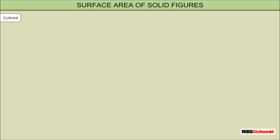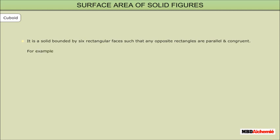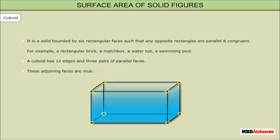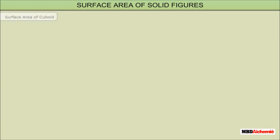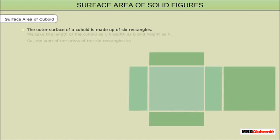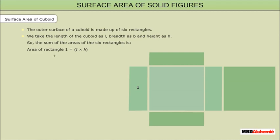Let us start with the cuboid. It is a solid bounded by six rectangular faces such that any opposite rectangles are parallel and congruent. For example, a rectangular brick, a matchbox, a water tub, a swimming pool. A cuboid has 12 edges and 3 pairs of parallel faces. These adjoining faces are mutually perpendicular and meet at a point called a vertex. The outer surface of a cuboid is made up of six rectangles. The surface area of the cuboid is equal to the sum of the area of six rectangles, which is equal to twice of (LB + BH + HL),